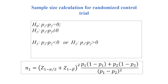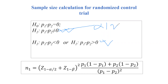Basically for hypothesis testing we use this type of sample size calculation. Based on the alternative hypothesis, we use a two-sided test or a one-sided test. For the two-sided test we use alpha divided by 2 in the formula, and for the one-sided test we use just alpha.